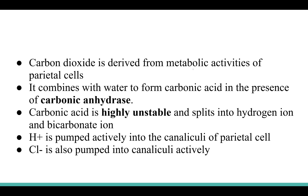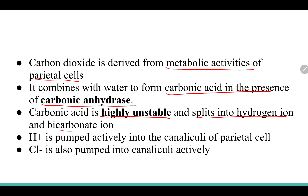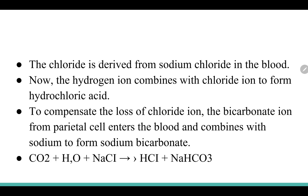Carbon dioxide is derived from metabolic activities of the parietal cells. It combines with water to form carbonic acid in the presence of carbonic anhydrase enzyme. This carbonic acid is highly unstable and splits into hydrogen ion and bicarbonate ion. Hydrogen is pumped actively into the canaliculi, and chloride — derived from sodium chloride in the blood — is also pumped actively into the canaliculi. Hydrogen ion combines with chloride ion to form hydrochloric acid. To compensate the loss of chloride ions, bicarbonate ion from the parietal cells enters the blood and combines with sodium to form sodium bicarbonate.